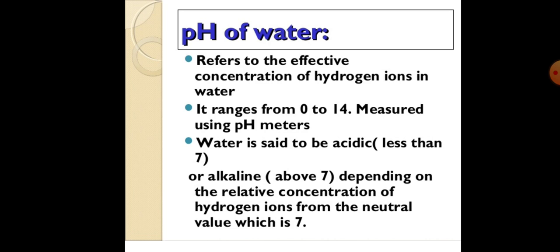Firstly, pH of water. It refers to the effective concentration of hydrogen ions in water. It ranges from 0 to 14, measured using pH meters. Water is said to be acidic if less than 7, or alkaline if above 7, depending on the relative concentration of hydrogen ions from the neutral value which is 7.